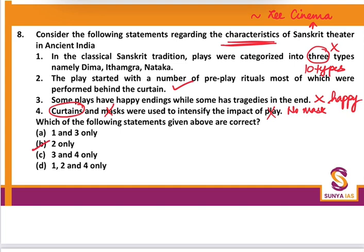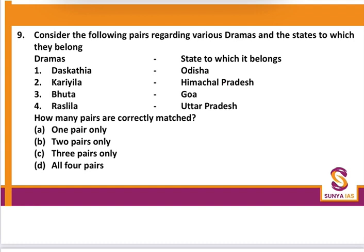Consider the following pairs regarding various dramas and the states to which they belong: Das Kathia — Odisha, correct; Kariyala — Himachal Pradesh, correct; Bhuta — not from Goa, it is from Karnataka (used to worship Bhuta so evil spirits do not harm); Raslila — not from Uttar Pradesh, it is from Gujarat. So only 2 pairs are correct.